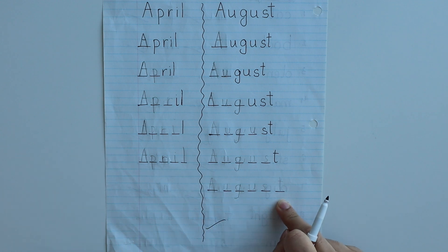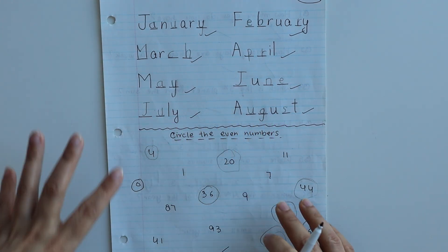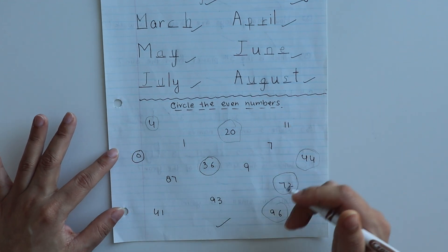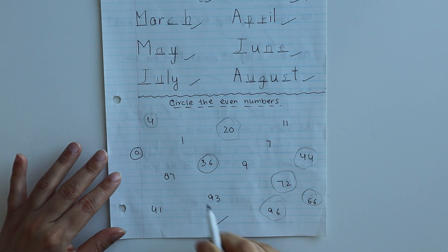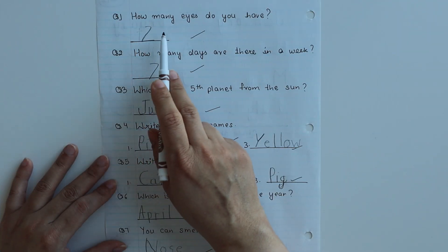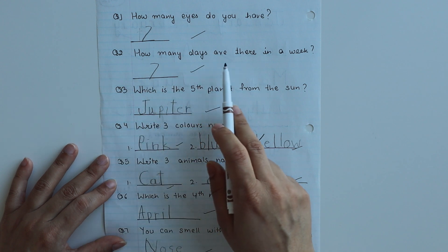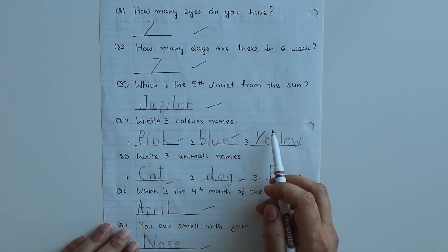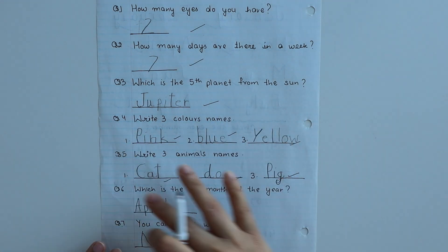Next I had a worksheet for August spellings. For the next day, the first worksheet is missing letters for months' names. Some letters are missing and you write them below. Then circle even numbers. I've also given questions like: how many eyes do you have? How many days are there in a week? Which is the fifth planet from the sun? Write three color names, write three animals. This is a test to see what the child knows.